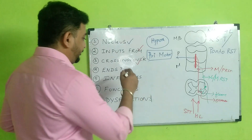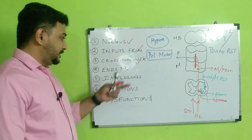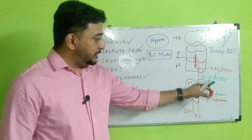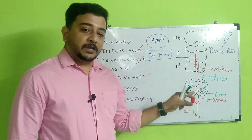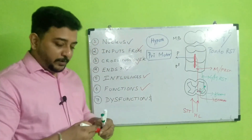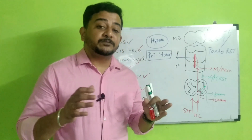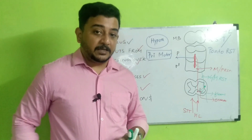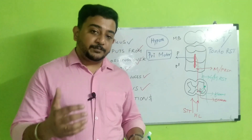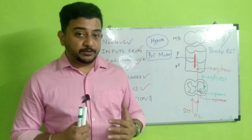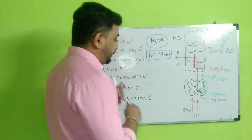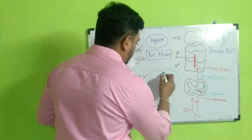It ends in alpha motor and gamma motor neurons of the flexors and extensors respectively. The medullary part influences the flexors and the pontine part influences the extensors. This is very important for locomotion, which requires reciprocal inhibition — when you use your flexors, your extensors must relax, otherwise the flexors cannot express themselves. This is called reciprocal inhibition.